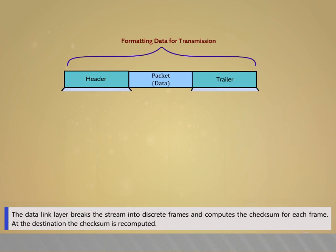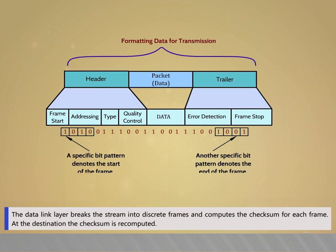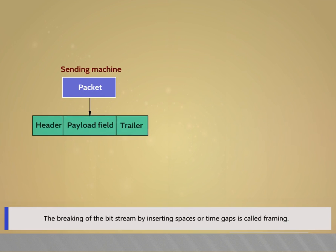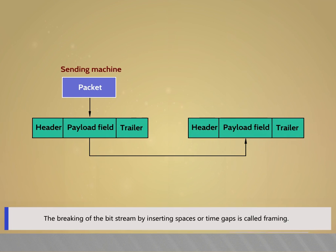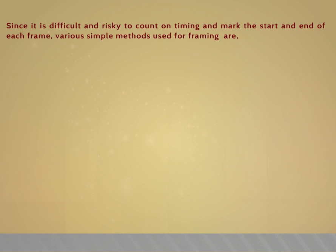The data link layer breaks the stream into discrete frames and computes a checksum for each frame. At the destination, the checksum is recomputed. The breaking of the bit stream by inserting spaces or time gaps is called framing. Since it is difficult and risky to count on timing and mark the start and end of each frame, various simple methods used for framing are: character count, starting and ending characters with character stuffing, and starting and ending flags with bit stuffing.